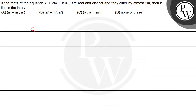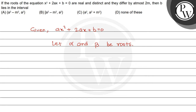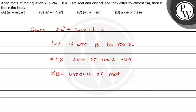Our given equation is x² + 2ax + b = 0. Let alpha and beta be its roots. So alpha + beta, the sum of roots, equals −2a/1 = −2a. And alpha × beta, the product of roots, equals c/a, where c is b, so alpha × beta = b.